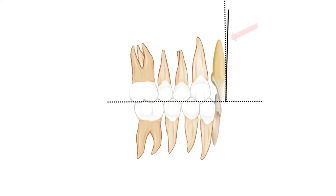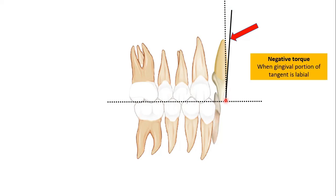In class 2 division 2, when the upper incisors are retrocline, you can appreciate that the gingival portion of this tangent line is now labial as compared to the incisal portion of this tangent line. All four incisors in upper arch are the only teeth having positive torque. Rest of the dentition have negative torque.